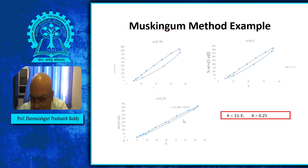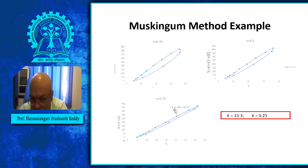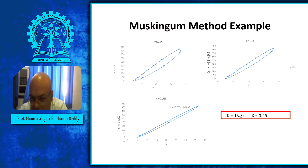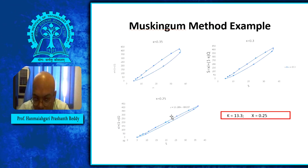We can stop at X = 0.25, as the loop is now closest to a straight line. Fitting a linear equation with XI + (1 − X)Q on the y-axis and S on the x-axis, the slope of that line gives K ≈ 13.289, which we round to 13.3, and X = 0.25. This is how we determine K and X from given inflow and outflow hydrographs for a channel reach.